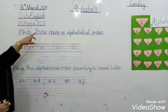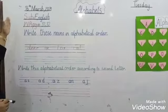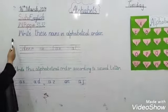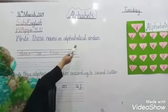Open workbook page number 32 and write today's date and day Tuesday and start question number 1. Write these nouns in alphabetic order.